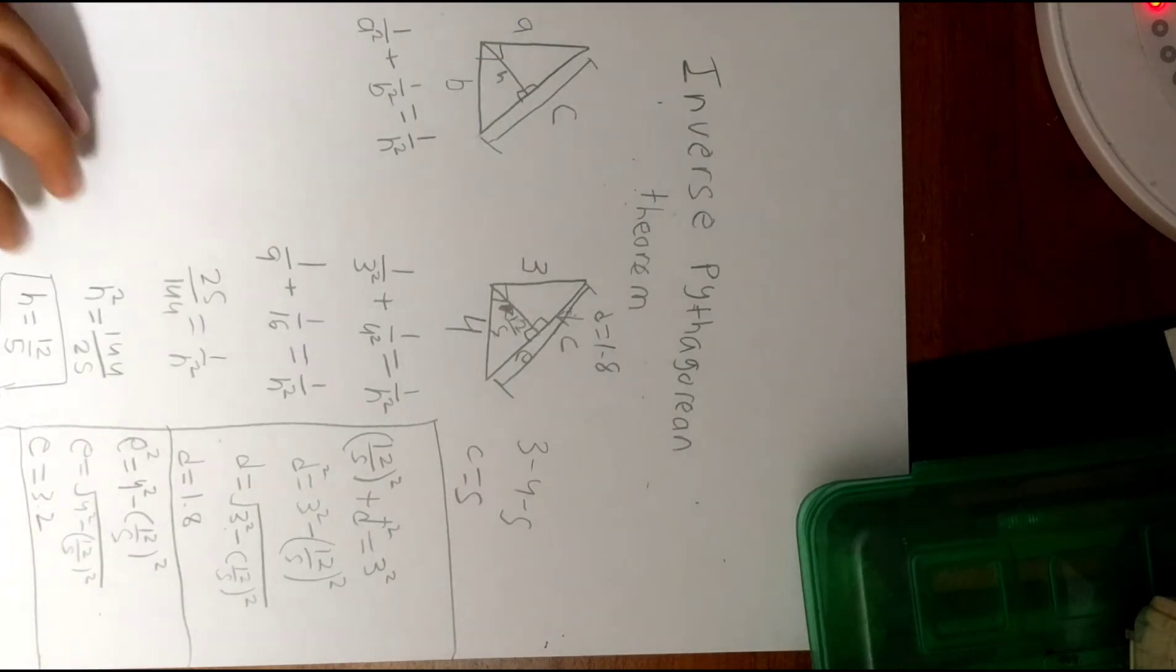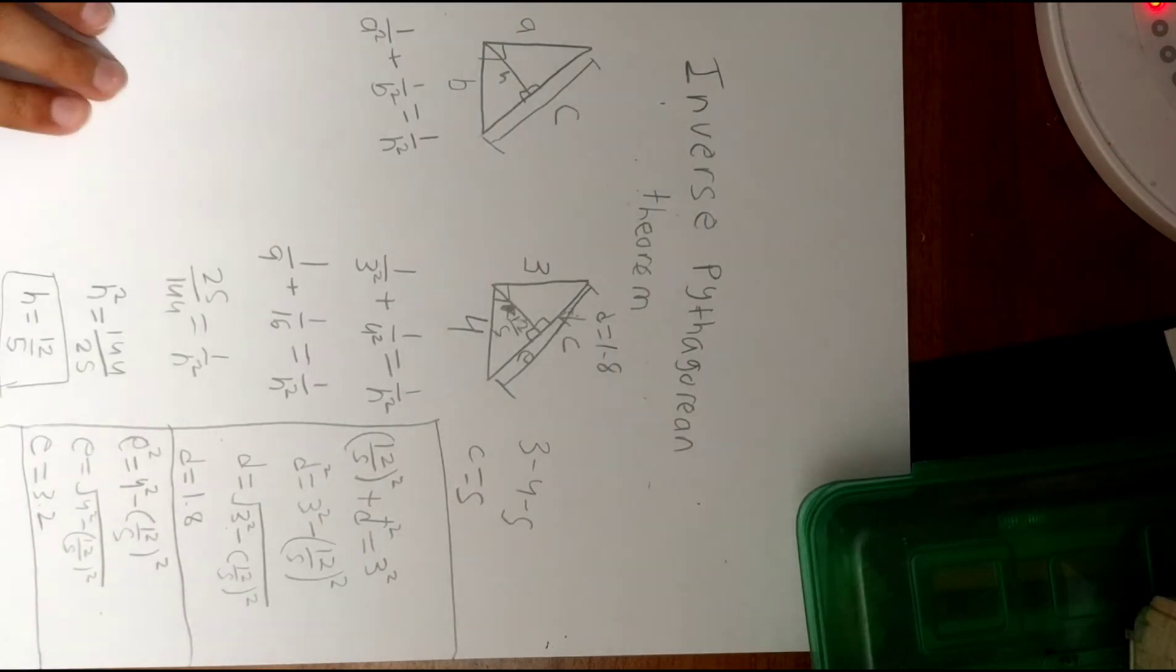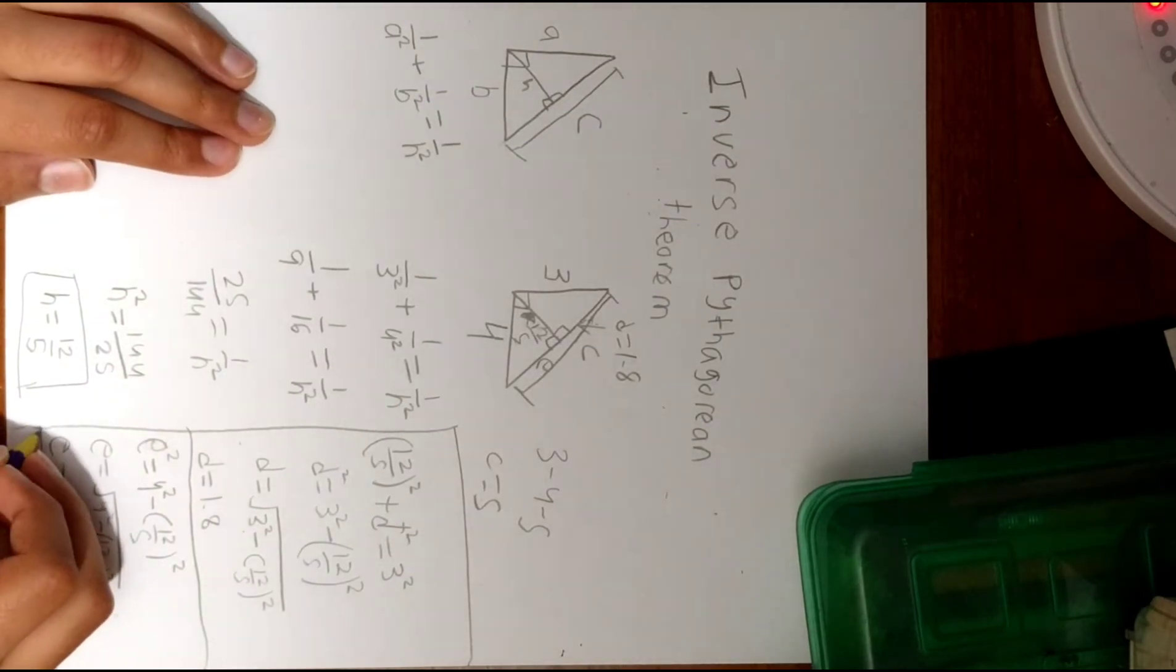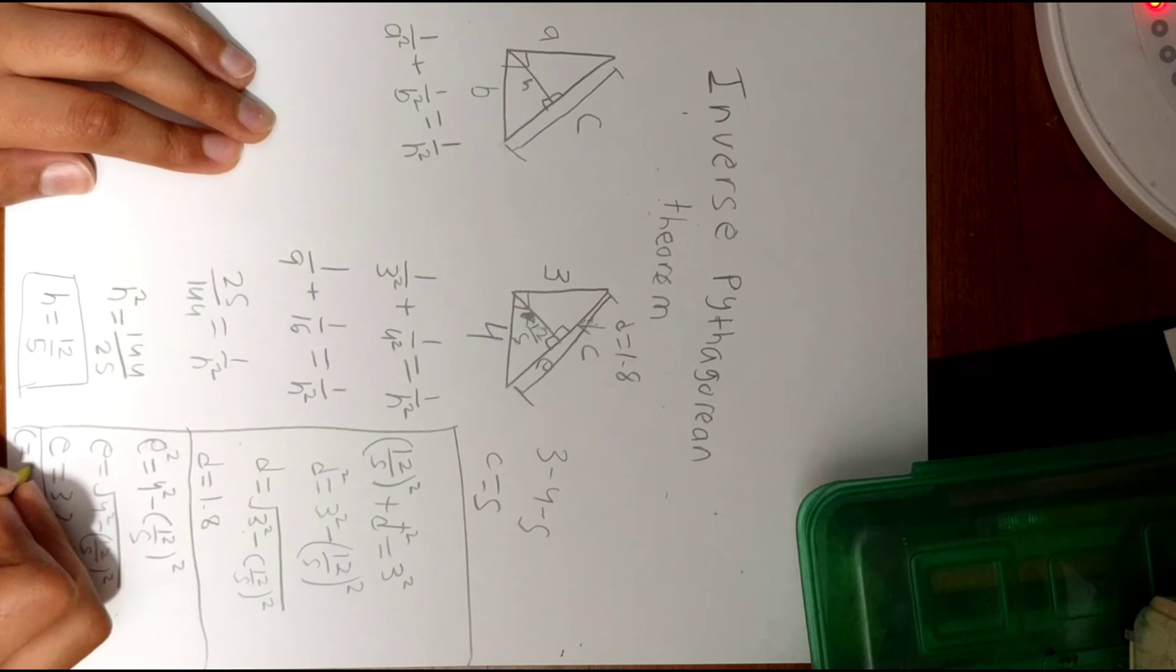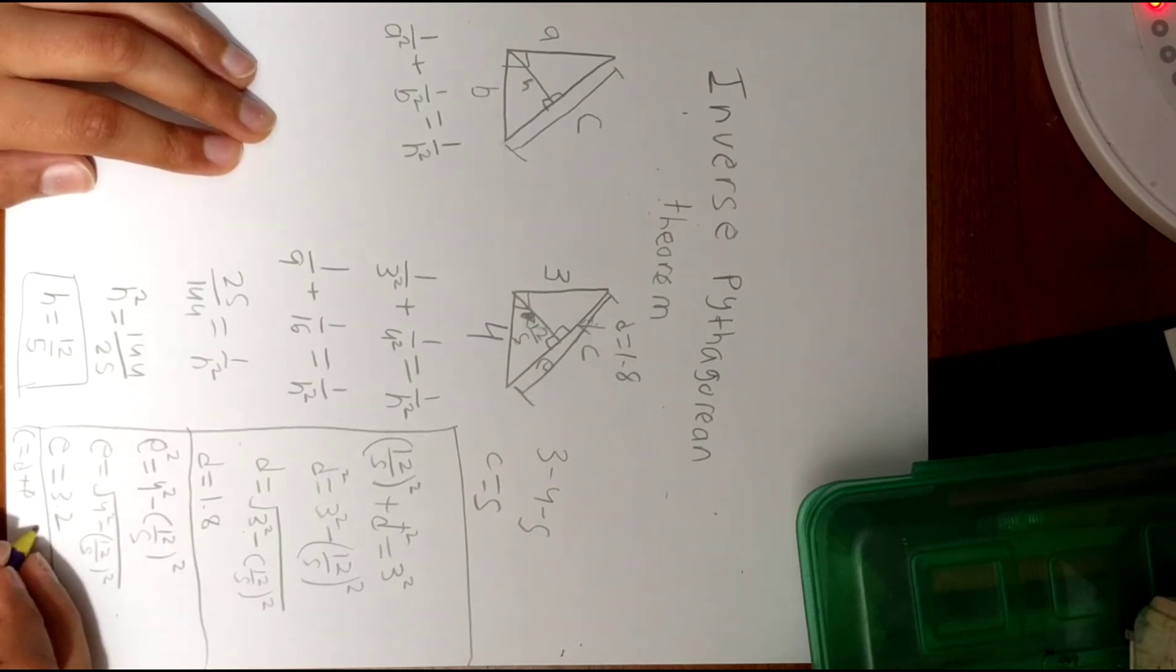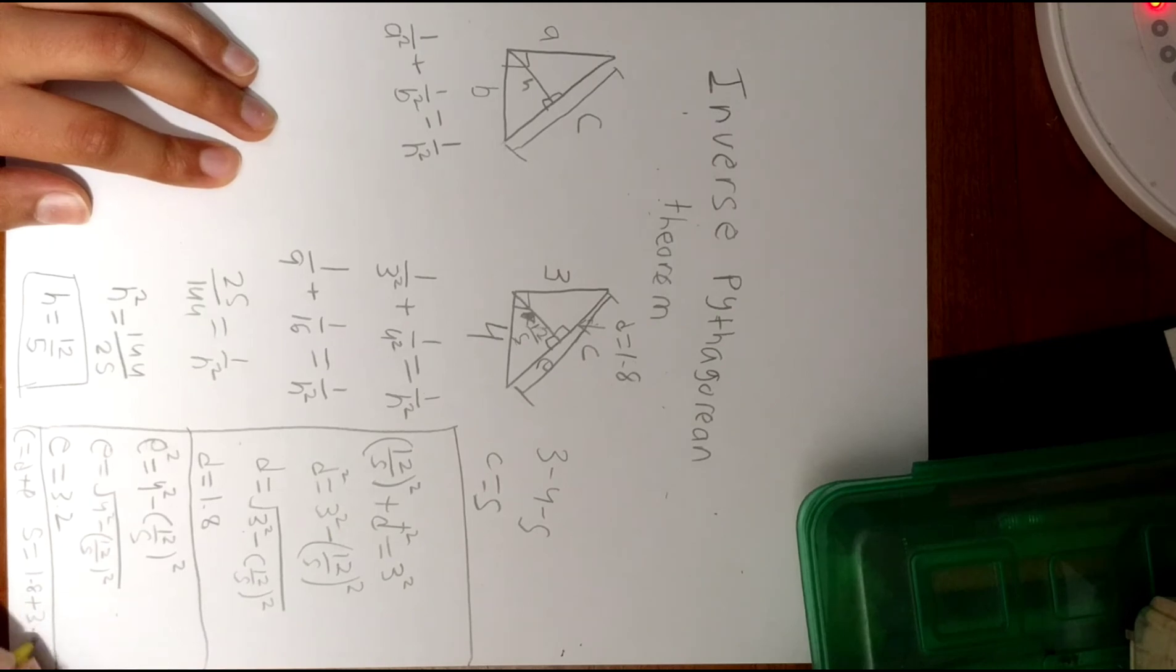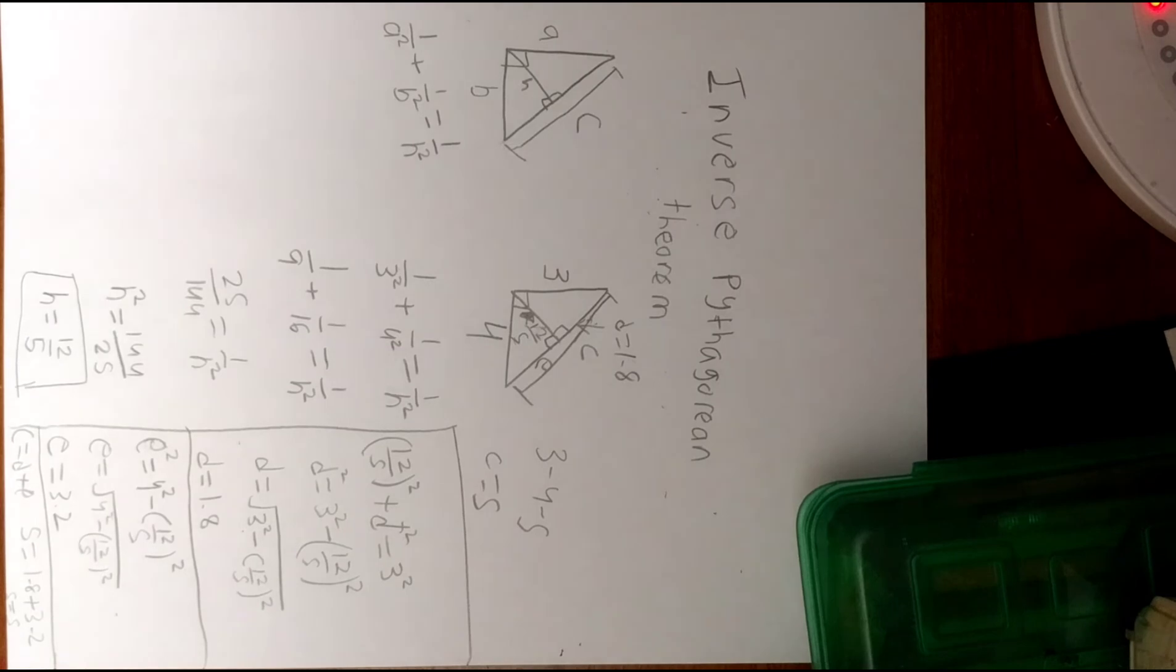Now for the final proof, the final homestretch of this proof, you would say that you know that c equals the sum of d plus e. And the sum of c equals... or the value of c we know is 5. So 5 equals 1.8 plus 3.2, 5 equals 5. And we have undoubtedly proven the inverse Pythagorean theorem.